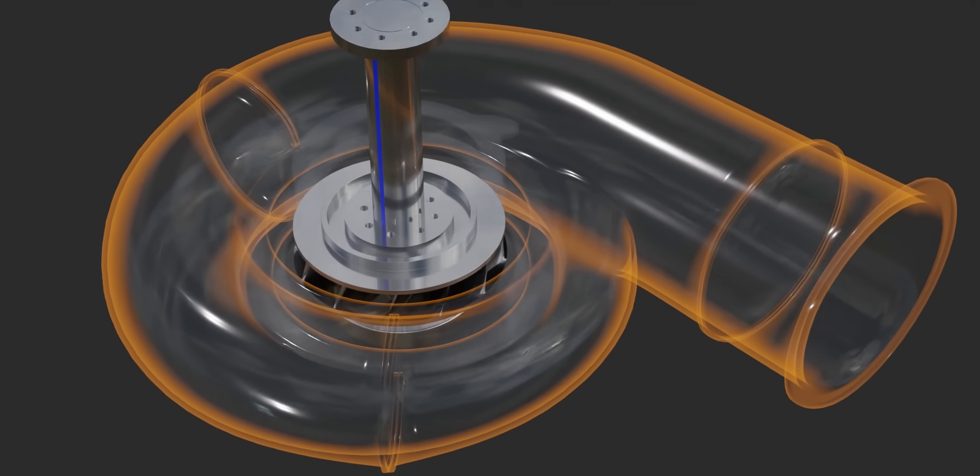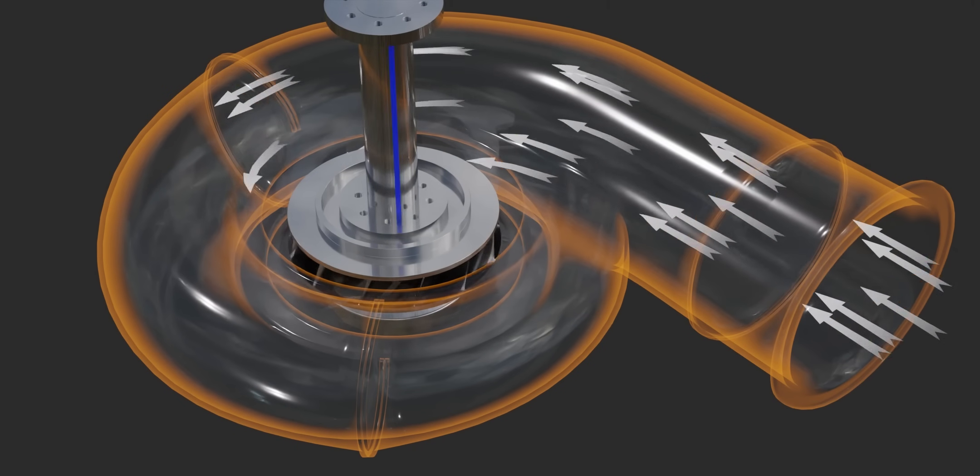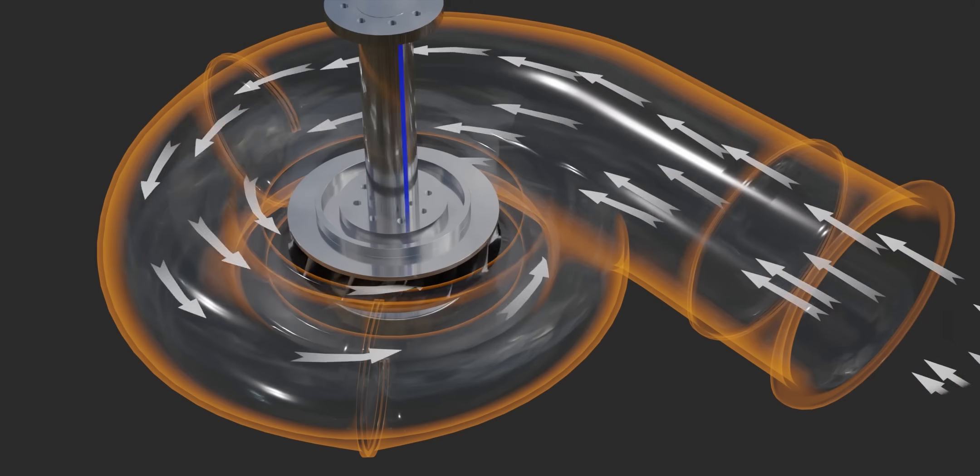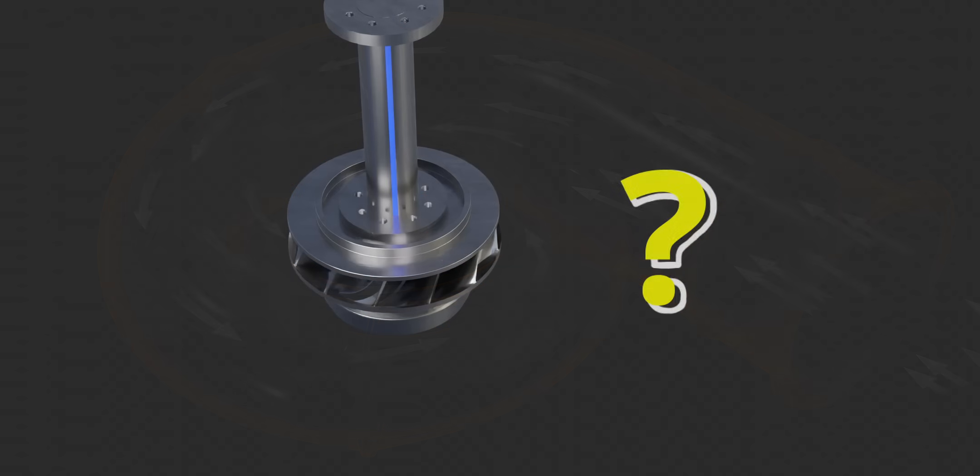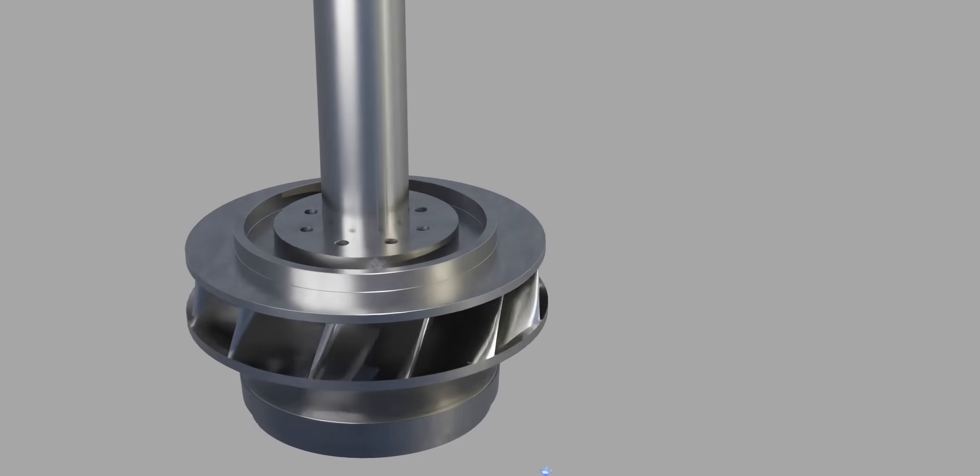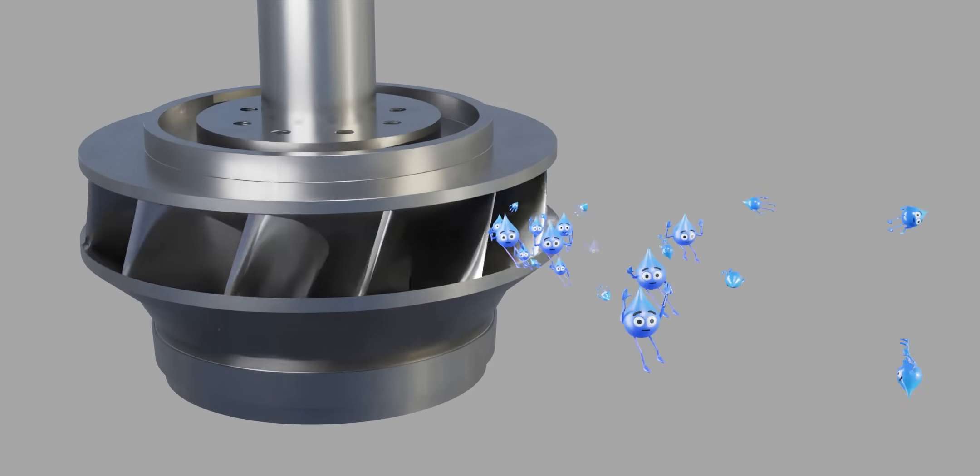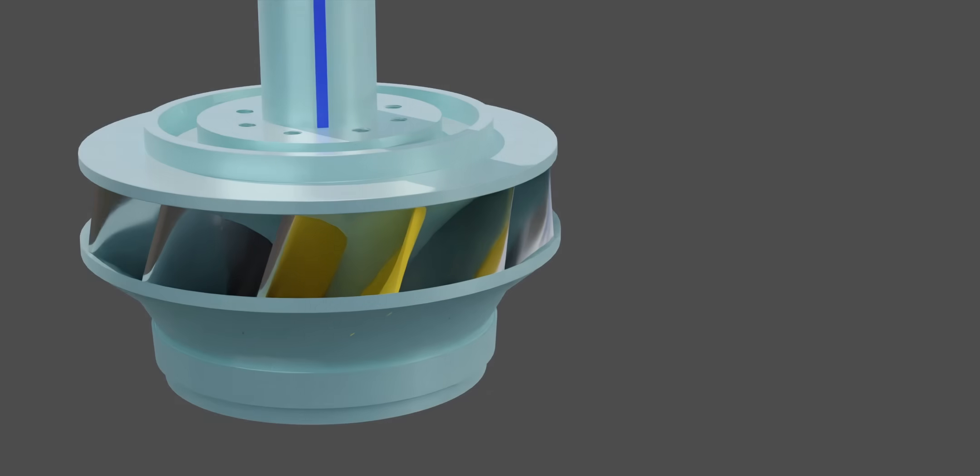When the high-energy water interacts with the Francis turbine blade, magic happens. The runner spins. To understand how the runner spins, let's follow a few fluid particles. You can see that these particles are taking a happy journey, flowing around the Francis turbine runner blades.